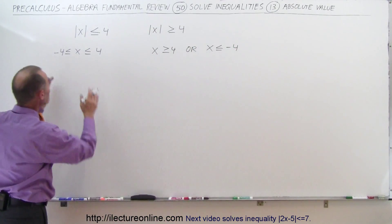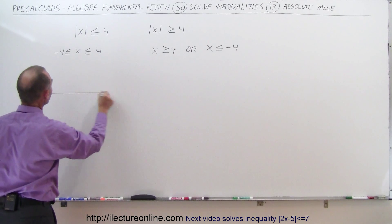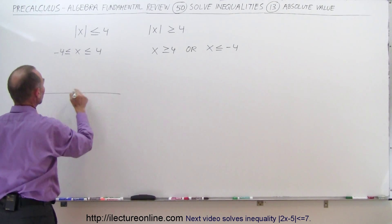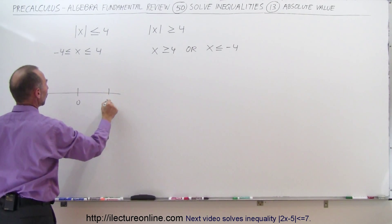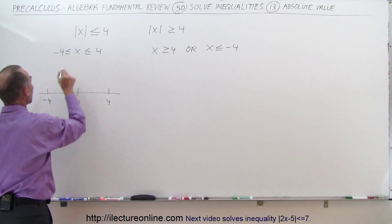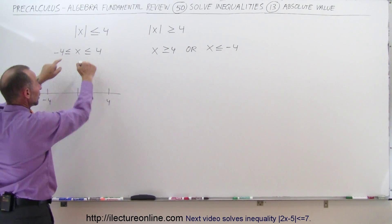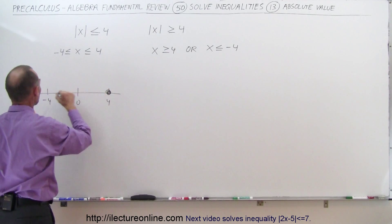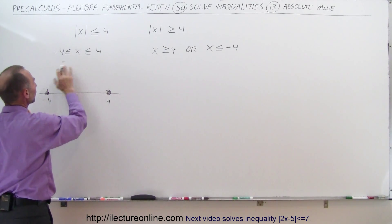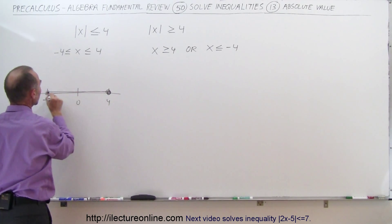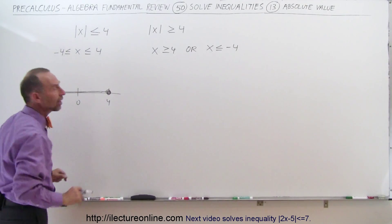That's how you can translate this kind of inequality. The solution to this inequality — when we draw the number line, we have the two limiting values. If this is 0, this is 4, and this is negative 4, we do include the endpoints because the equal sign is right there, so we draw solid circles, and we're looking for all values between, which means this region right here, not including the region out there.